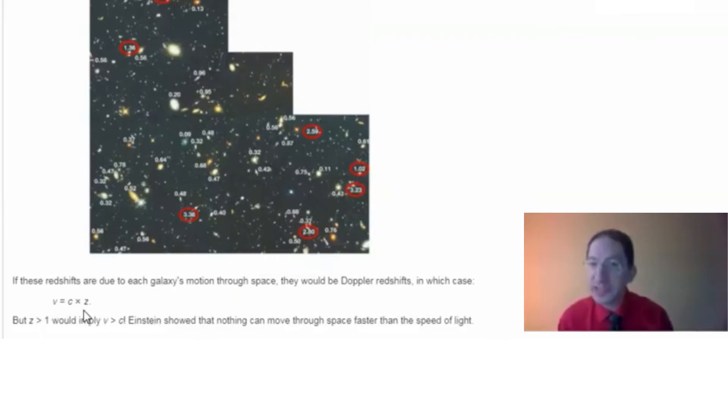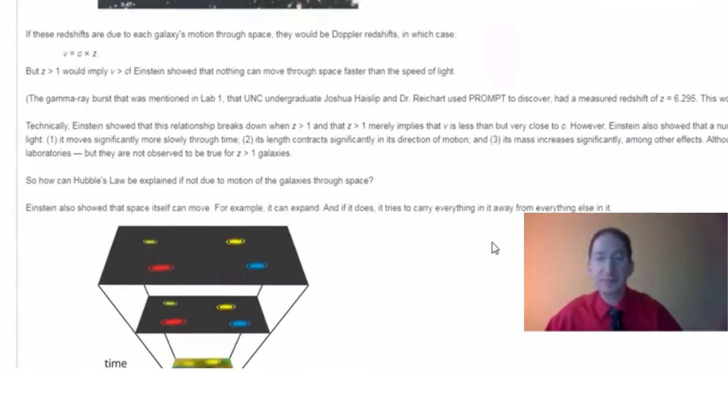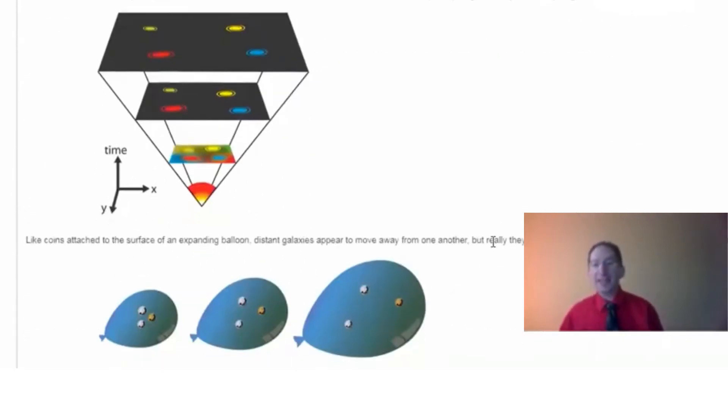So how can Hubble's law be explained, if not due to the motion of galaxies through space? Well, Einstein showed that space itself can move, so we don't have to try to explain the expansion of the universe by galaxies moving through space, but rather by space itself expanding, with everything in it being carried along for the ride. We can see that in this figure here, where you have a two-dimensional representation of space, full of objects, and as that space expands, the objects move apart from each other. Not because they're moving through space, but because space is expanding, taking them along with it.